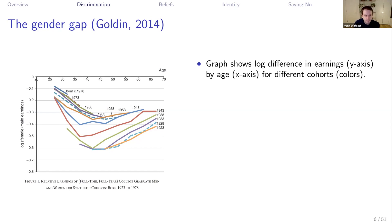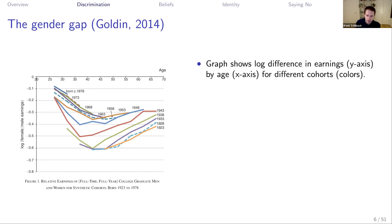What do we see? First, there's a pretty large gender gap throughout the graph. Different lines represent different birth cohorts, starting in 1923 and going in five-year intervals up to more recent cohorts. We see a significant gender gap in all lines. For the most recent cohorts, the gap seems to be about 20 to 30%. The gender gap has fallen — older cohorts had an even larger gap — so there has been progress.